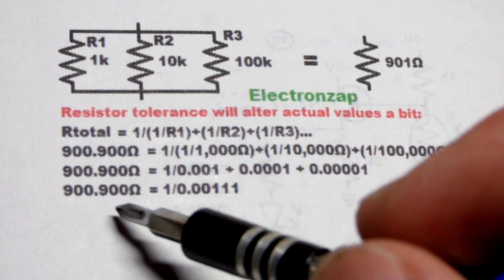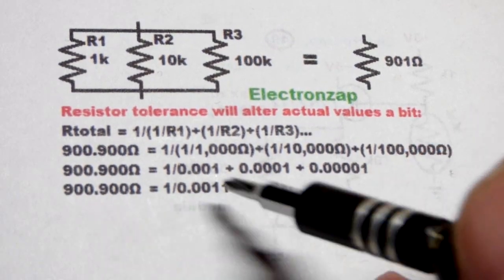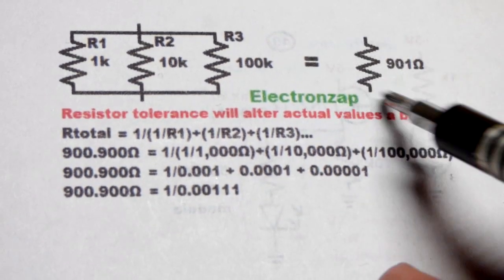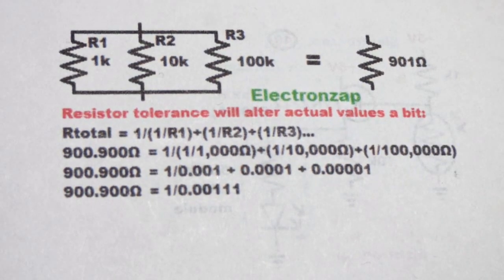So it just keeps going 900.900, 900, 900, 900, and so on. So I just put that 900.900, and I rounded it off to 901 for the example up there.